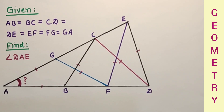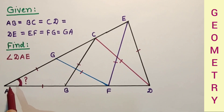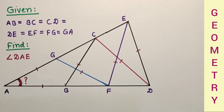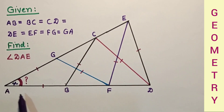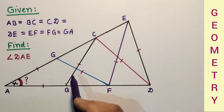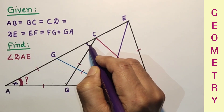If possible, provide a better solution or method in the comment section. Let us start from angle DAE. Let us suppose angle DAE = X. Since AB is equal to BC, triangle ABC is an isosceles triangle, so this angle is also equal — this will also be X.